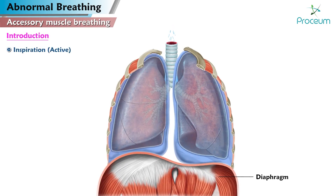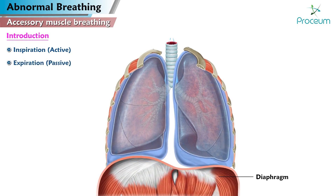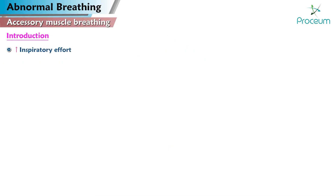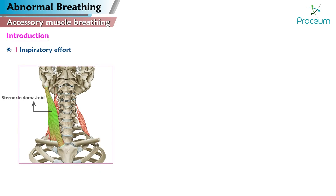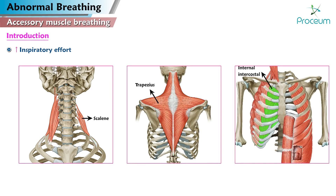Normal inspiration involves only the diaphragm. Expiration is a passive process due to elastic recoil of the lungs. When inspiratory effort increases, it requires the use of the sternocleidomastoid, scalene, trapezius, internal intercostal, and abdominal muscles. These are known as accessory muscles of breathing.